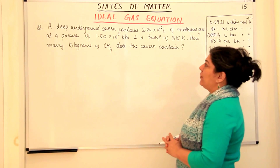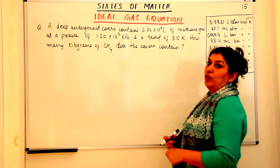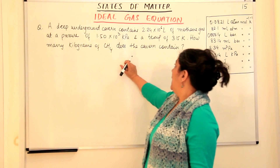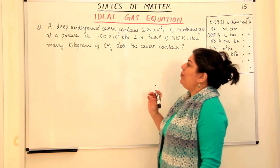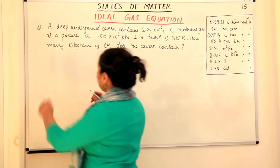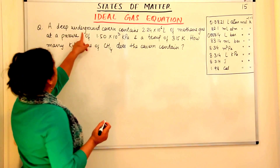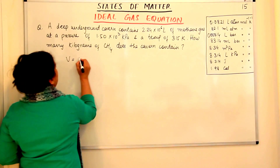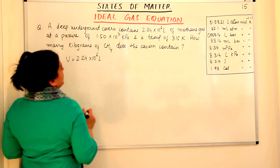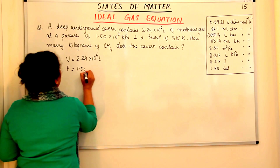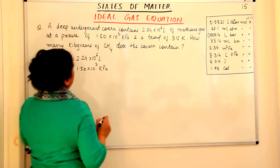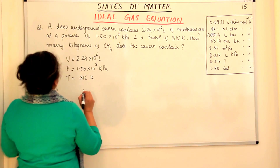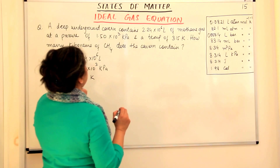The last question: a deep underground cavern (a cave) contains 2.24 × 10⁶ litres of methane gas at a pressure of 1.50 × 10³ kilopascals and a temperature of 315 Kelvin. How many kilograms of methane does the cavern contain? The volume is 2.24 × 10⁶ litres, pressure is 1.50 × 10³ kPa, and temperature is 315 Kelvin — since it is already in Kelvin, no conversion is needed.